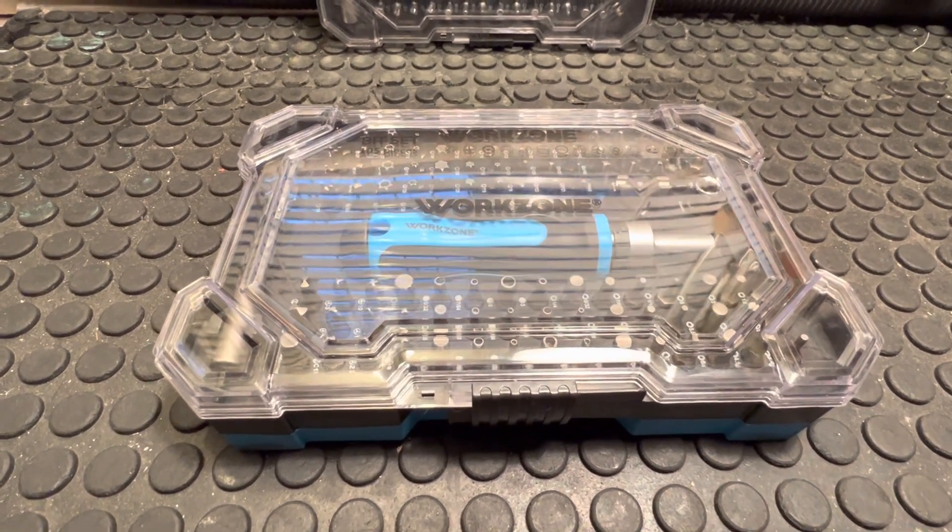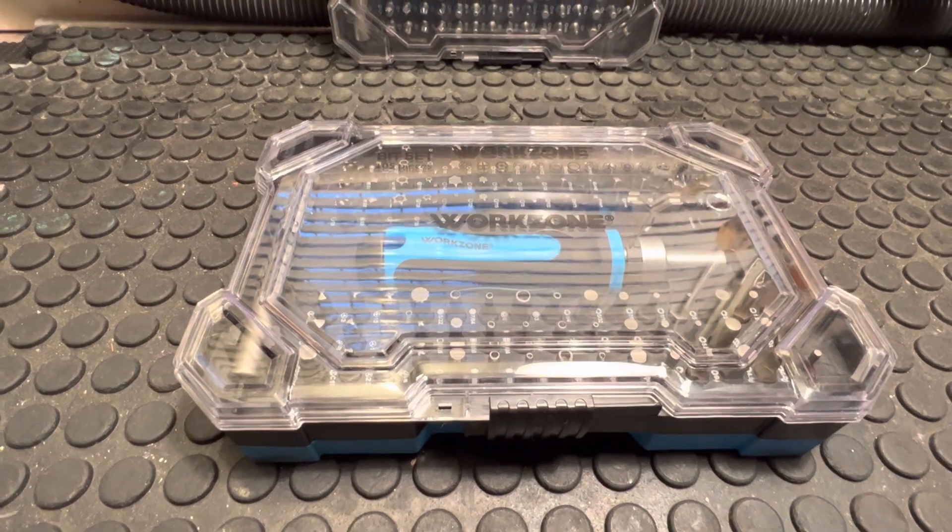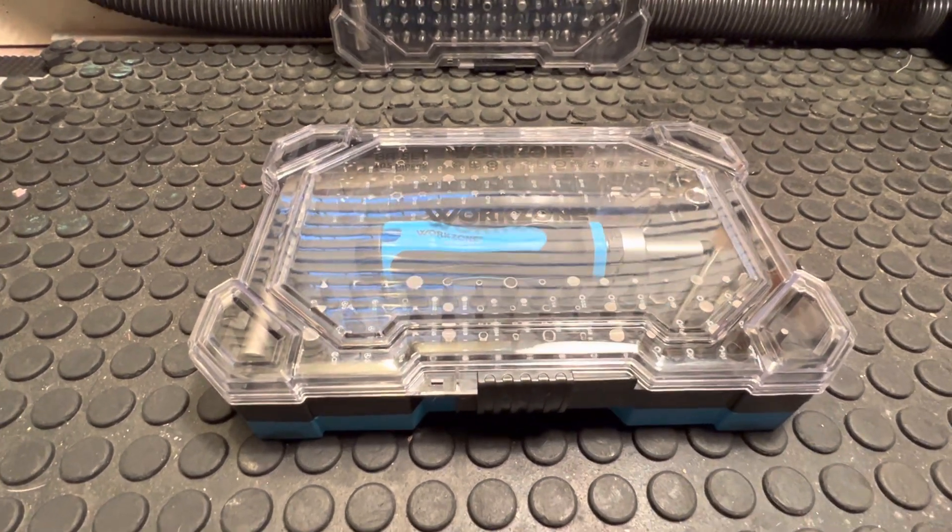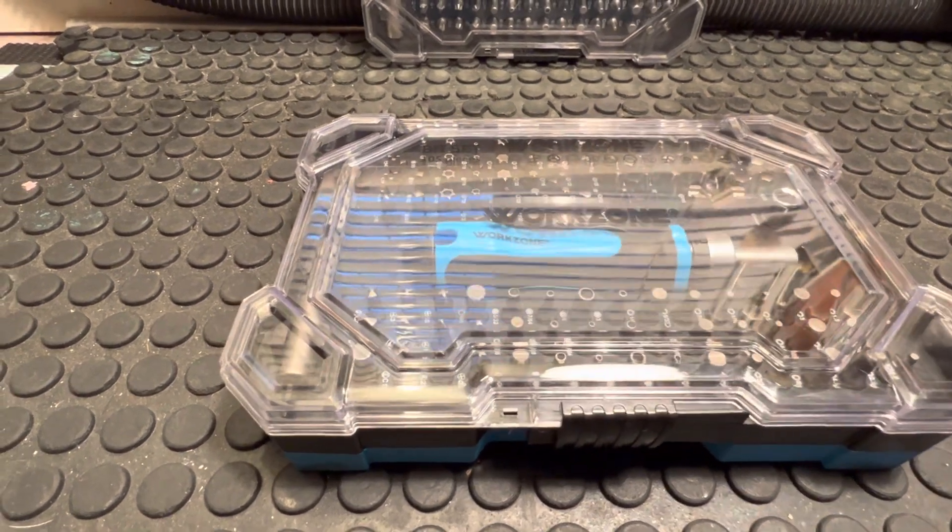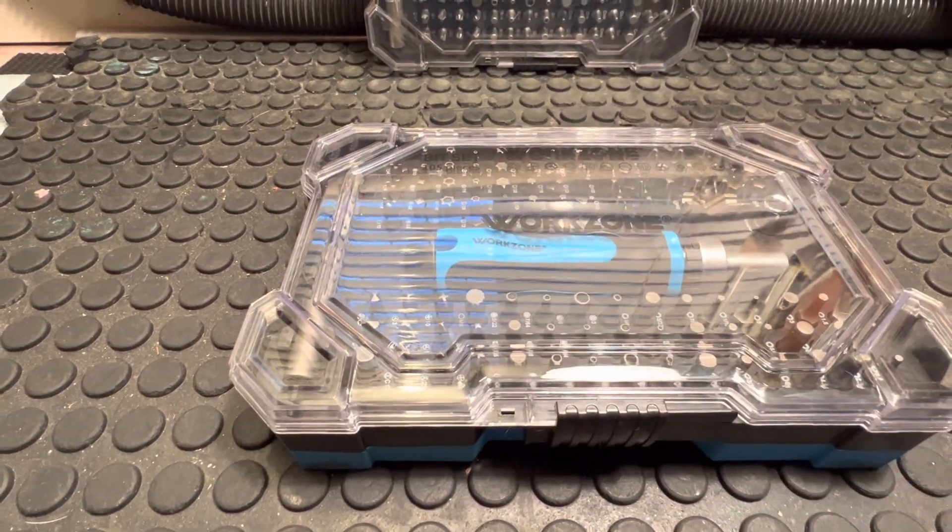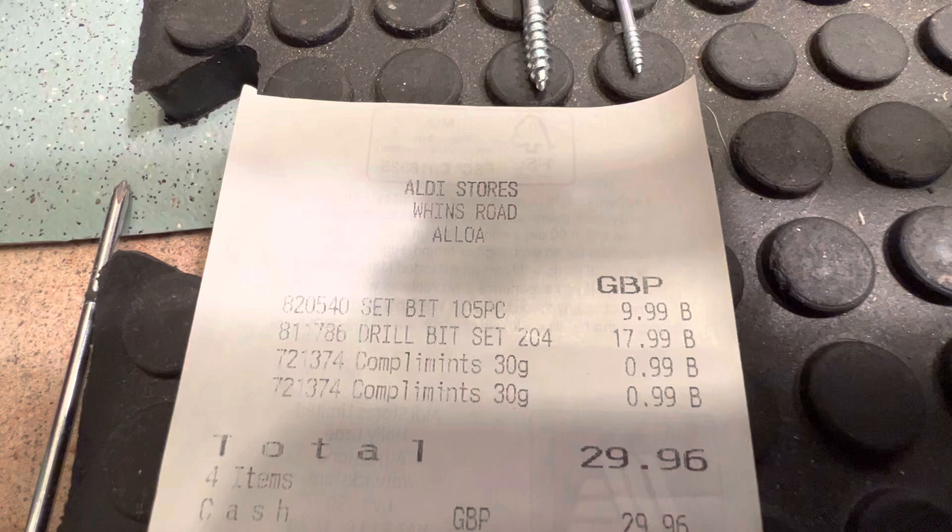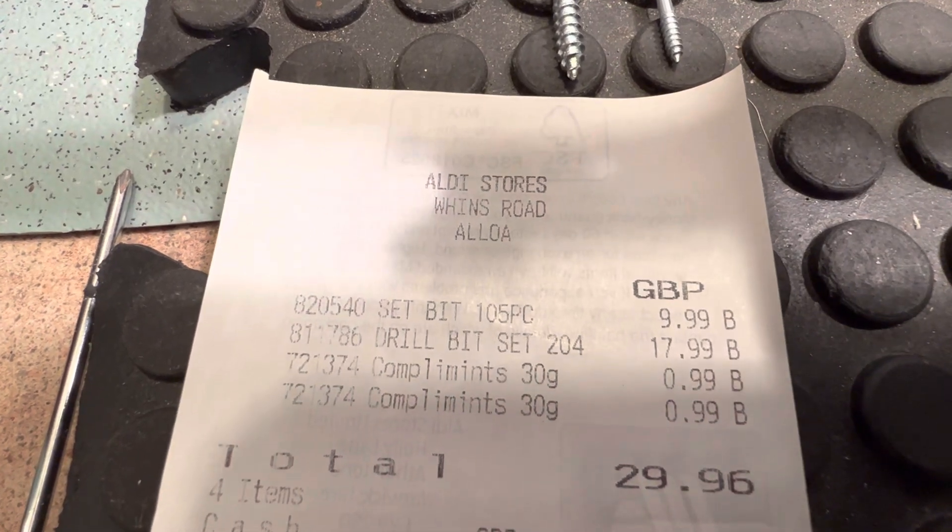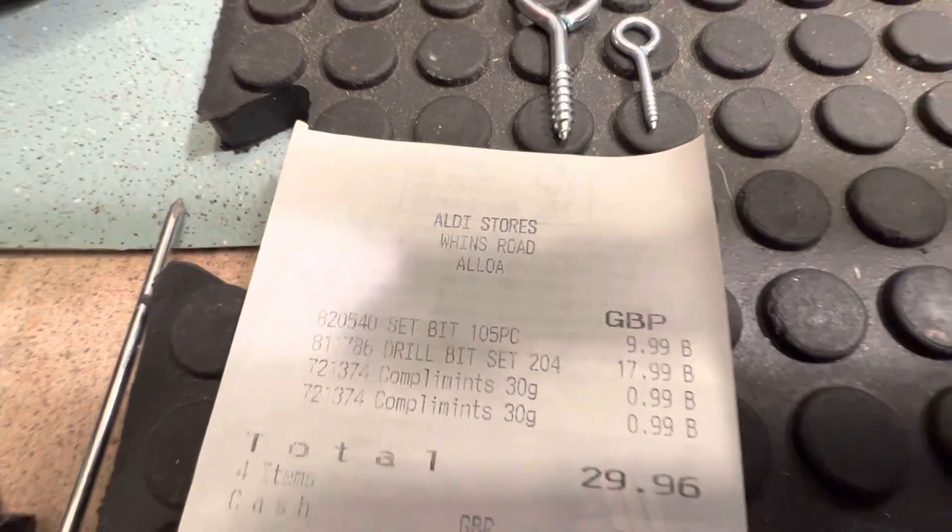Today we're going to have a wee talk on what I purchased from Aldi's. It's a wee screwdriver set. Yep, it's 105 pieces. And there's how much it cost. Set bit, 105 piece, £9.99 guys, £9.99 it cost.